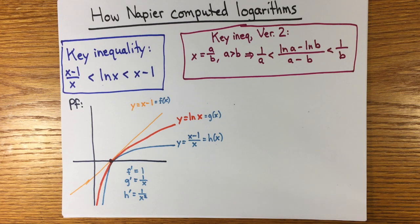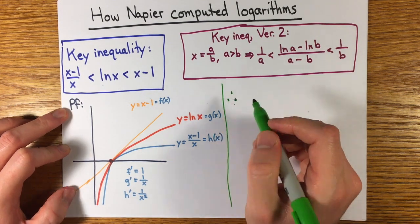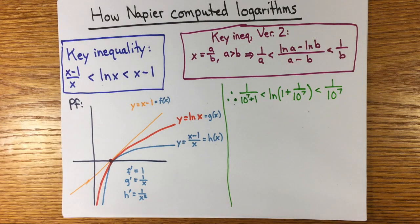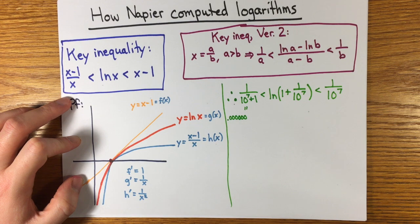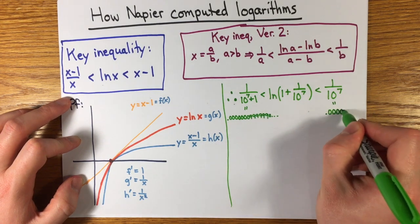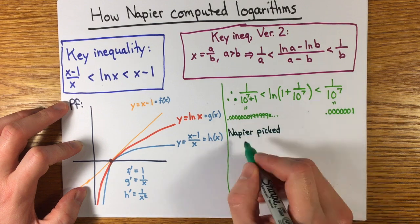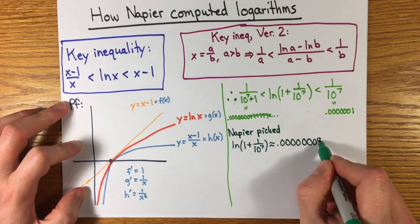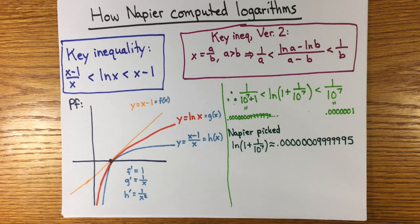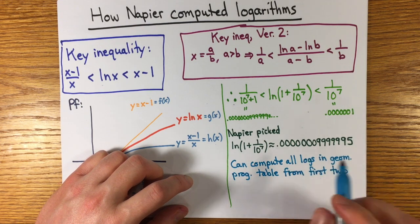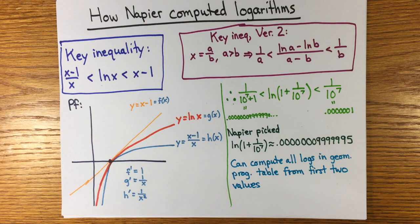A second version of this inequality comes from setting x equals a over b with a greater than b. This can be written 1 over a is less than log a minus log b over a minus b is less than 1 over b. Of course, these inequalities are only useful if x is close to 1 or if a is close to b. With this inequality, you get that log of 1 plus 1 over 10 to the 7th is between 1 over 10 to the 7th and 1 over 10 to the 7th plus 1, which led Napier to simply take an intermediate value like the middle value, 0.000000009999999995. Now you have the logs of all the values in the first reference table, and you can use the inequality to compare the log of 1 plus 1 over 10 to the 5th to the log of the last entry in the first table, which is very close to 1 plus 1 over 10 to the 5th. So you get an arithmetic progression of all the logs in the second table, and you do the same for all the other tables.